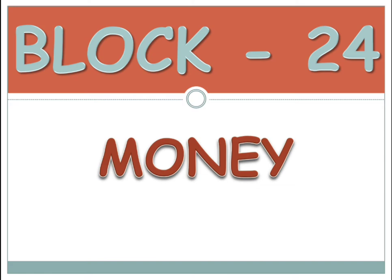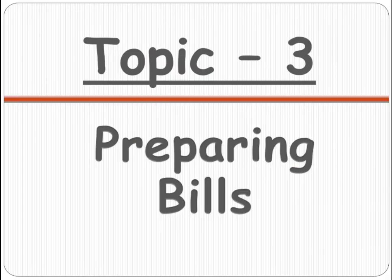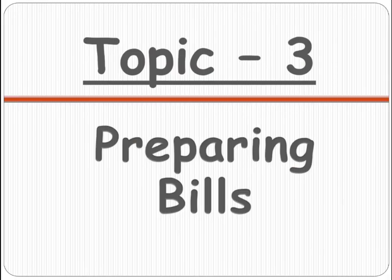Now let's learn how to prepare a bill — the third topic: preparing bills. So read the given price list. They have some fruits: apple, banana, orange, and watermelon, and the cost is also given. The cost of one pineapple is 55 rupees, the cost of one dozen bananas — one dozen means 12 bananas — is 48 rupees. For 6 oranges it is 90 rupees, and the cost of one watermelon is 115 rupees.